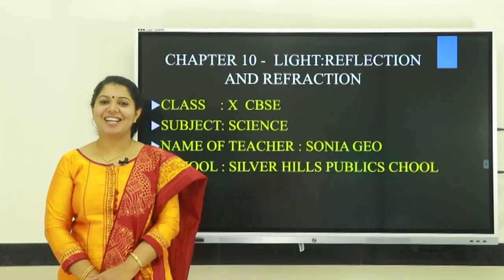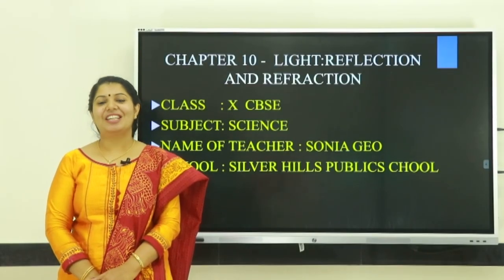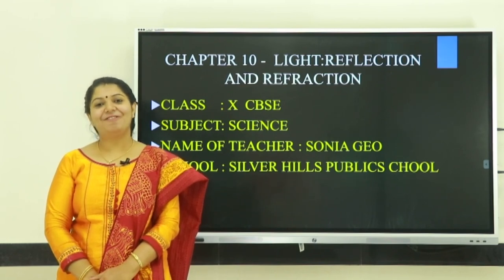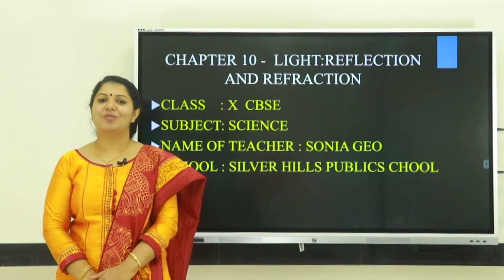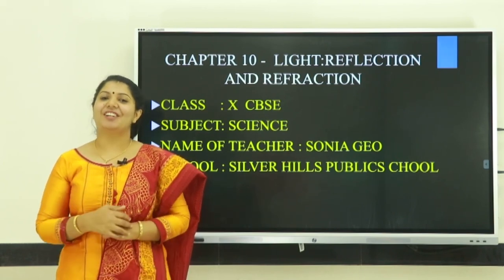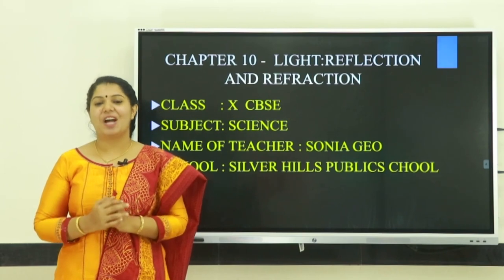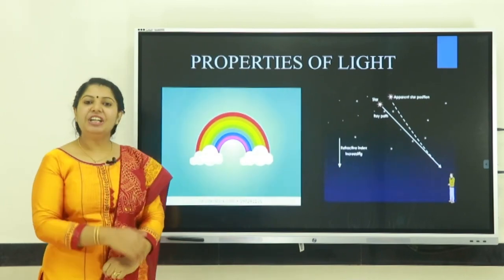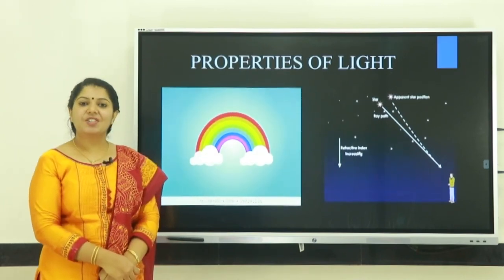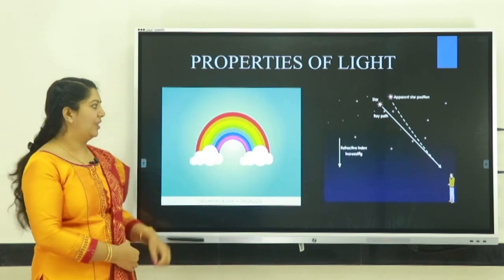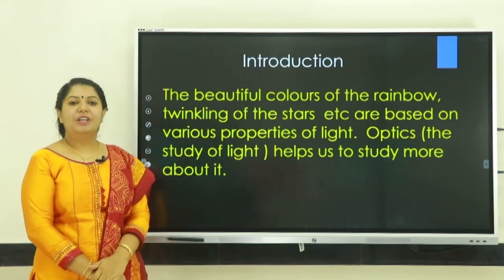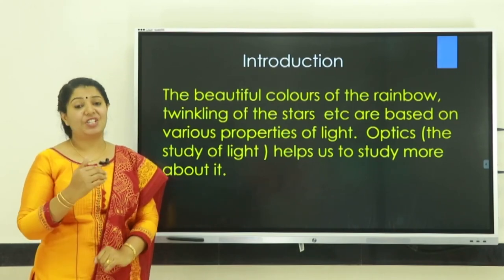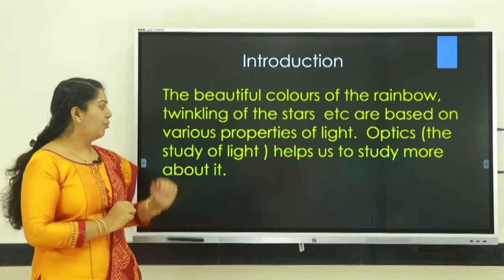Hi everyone, I am Sonia Gio, Faculty of Silver Hills Public School. Here I am going to discuss about the chapter Light, Reflection and Refraction of Class 10 CBSE. For a better understanding, I have divided this chapter into different topics. The various colors of the rainbow, the twinkling effect of stars, are based on different properties of light. Optics, the branch of physics which deals with the study of light, helps us to study more about it.